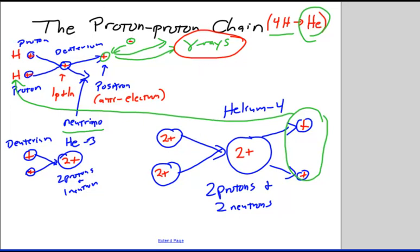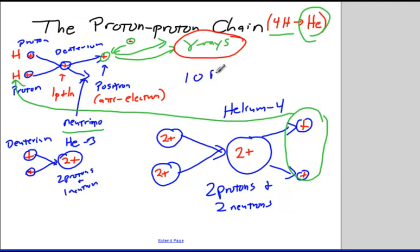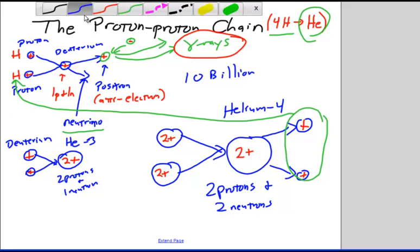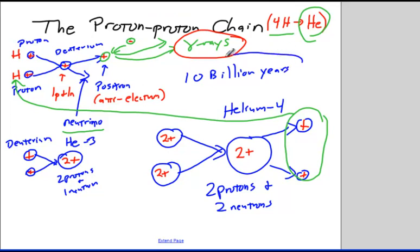This process on the sun will last 10 billion years — it will take 10 billion years for the sun to convert all of its hydrogen into helium. Then the sun will have to go on through its evolution. But for 10 billion years, this proton-proton chain is able to provide energy to the sun.